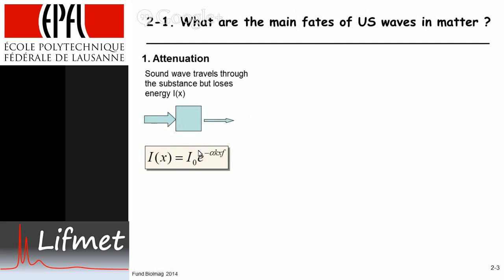That is described by a simple exponential law with some factors to consider in the exponent. We have the initial intensity I₀, and then as a function of space for a homogeneous object, this intensity decreases exponentially.